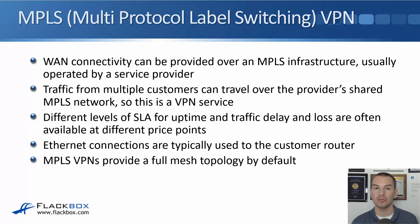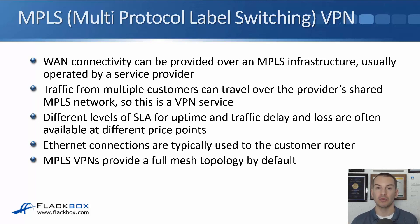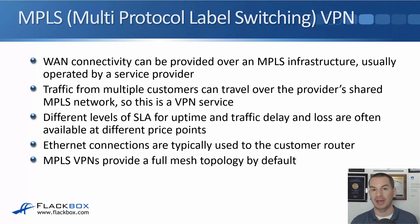Ethernet connections are typically used to connect down to the customer router. MPLS VPNs provide a full mesh topology by default. This is different than leased lines which use point-to-point links. With point-to-point links, if you wanted full mesh connectivity you would need to put in those links going everywhere. With MPLS, when you add a sixth site to an existing five-site VPN, it's automatically added with full mesh connectivity to all of the other sites. This means whenever one site is communicating with another, the traffic goes over the optimum path.